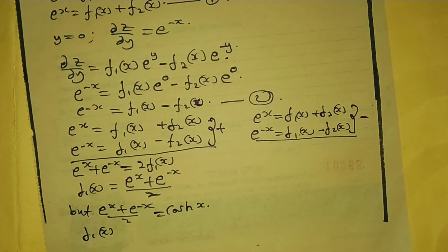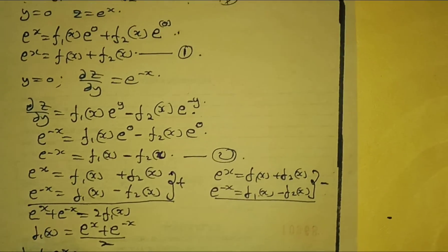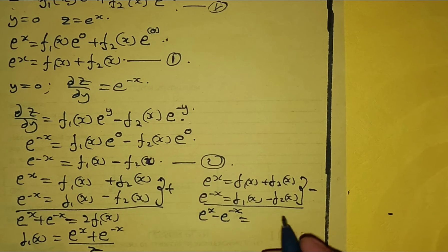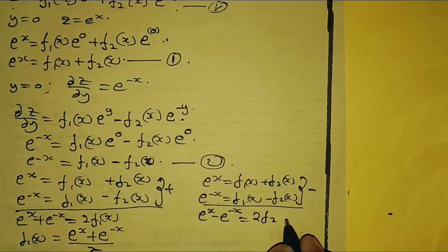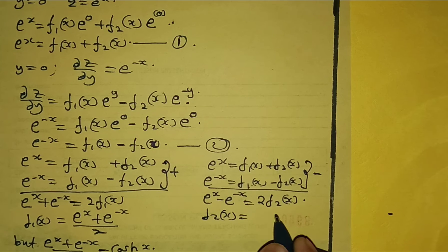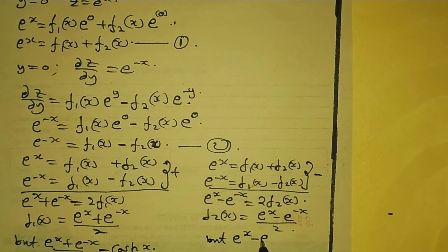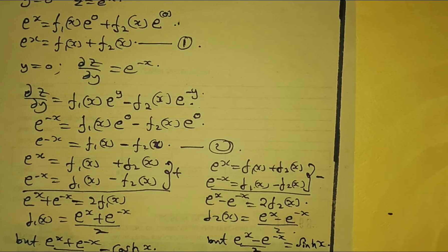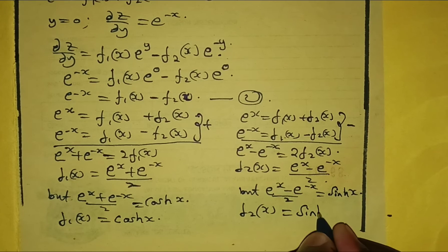Subtracting equation 2 from equation 1 gives 2f₂(x) = e^x − e^(−x), so f₂(x) = (e^x − e^(−x))/2. But (e^x − e^(−x))/2 equals sinh(x), so f₂(x) = sinh(x). Similarly, adding the equations gives f₁(x) = cosh(x).